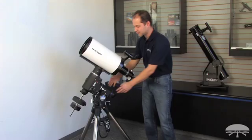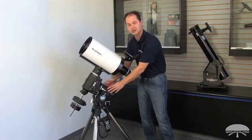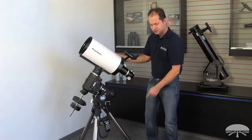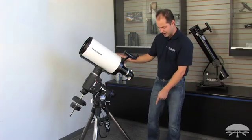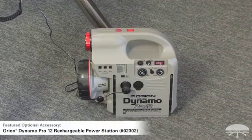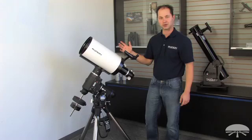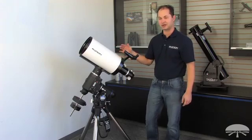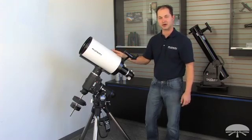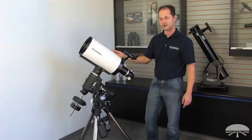The first thing you want to make sure you do is polar align the mount. It's got to be pointing at Polaris for the motors to track accurately. You need some sort of power source for it. Here I've got battery power, the Dynamo Pro battery. We have AC adapters if you are in the backyard and you've got access to a wall outlet. But if you're in the woods away from any kind of power source and maybe away from your car, a good rechargeable battery is something nice to have.